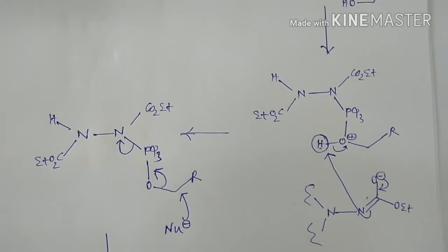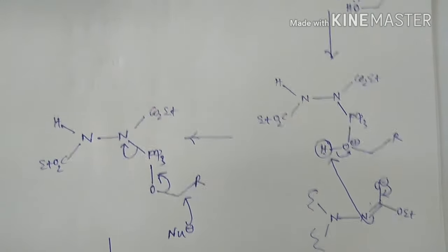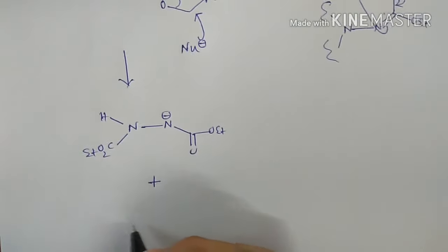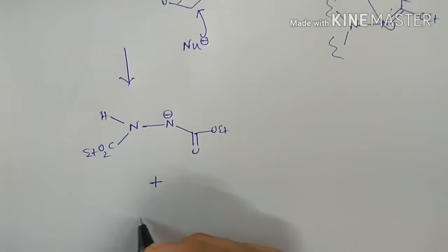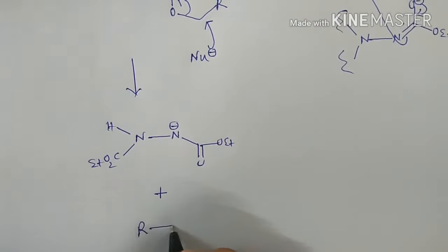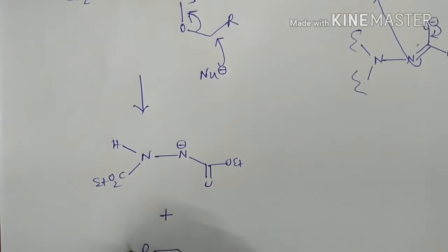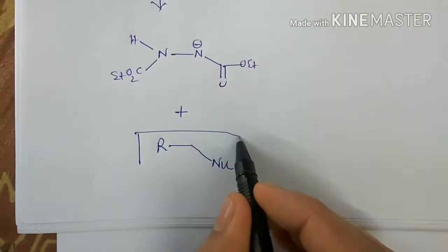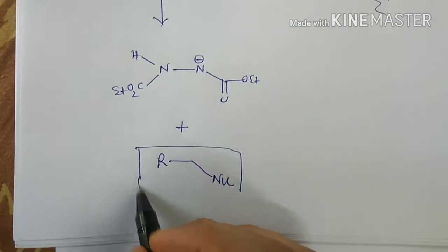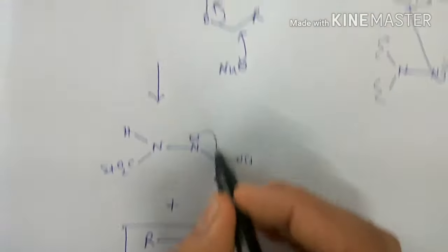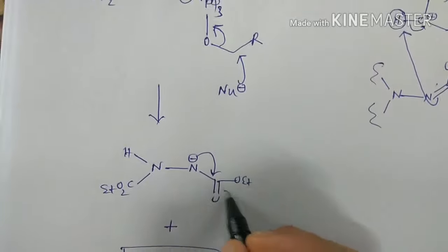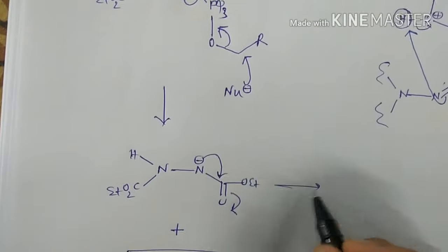The product is forming here. This is the product which is forming — R-substituted product — and this intermediate can stabilize through resonance.